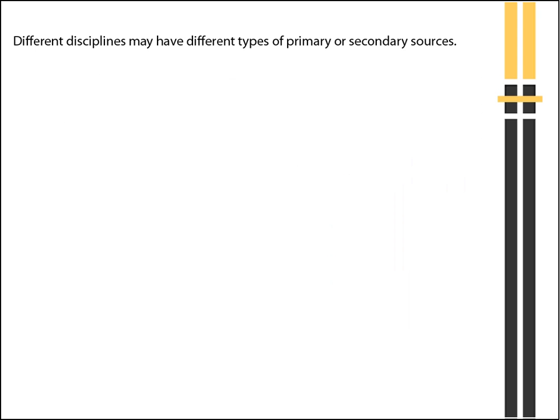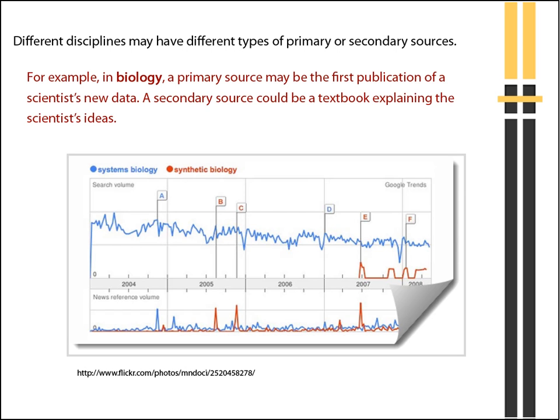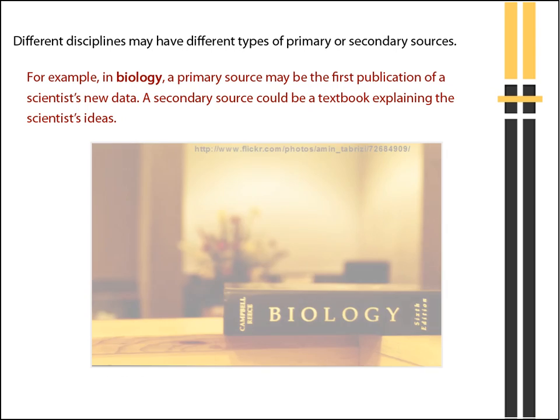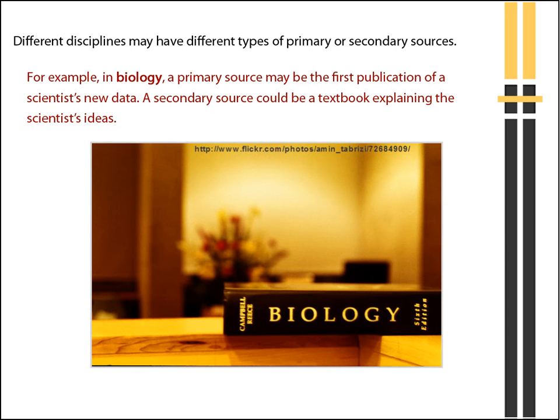Different disciplines may have different types of primary or secondary sources. For example, in biology, a primary source may be the first publication of a scientist's new data, while a secondary source could be a textbook explaining the scientist's ideas.